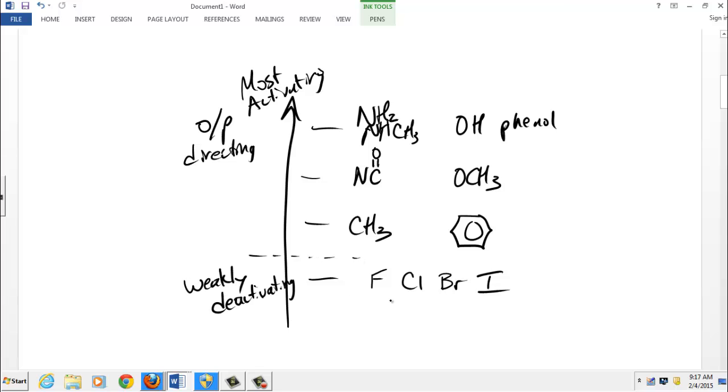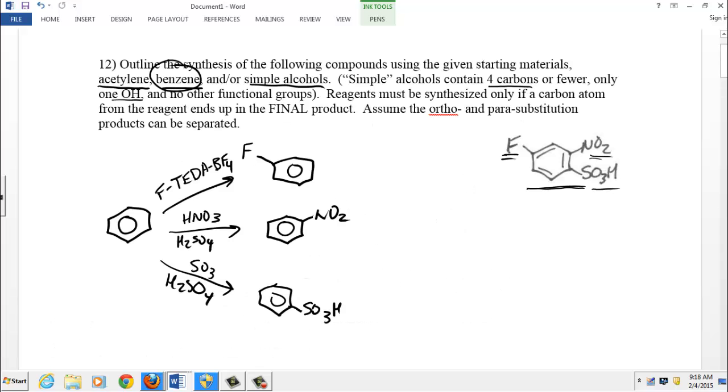And those are weakly deactivating. The weakly deactivating groups, what that means is that when these are present on the ring, they tend to slow the reaction down relative to pure benzene. We need to memorize this list. And the assumption is if there are any other functional groups on the benzene ring, they're going to be the strongly deactivating groups and they're going to be meta directing.